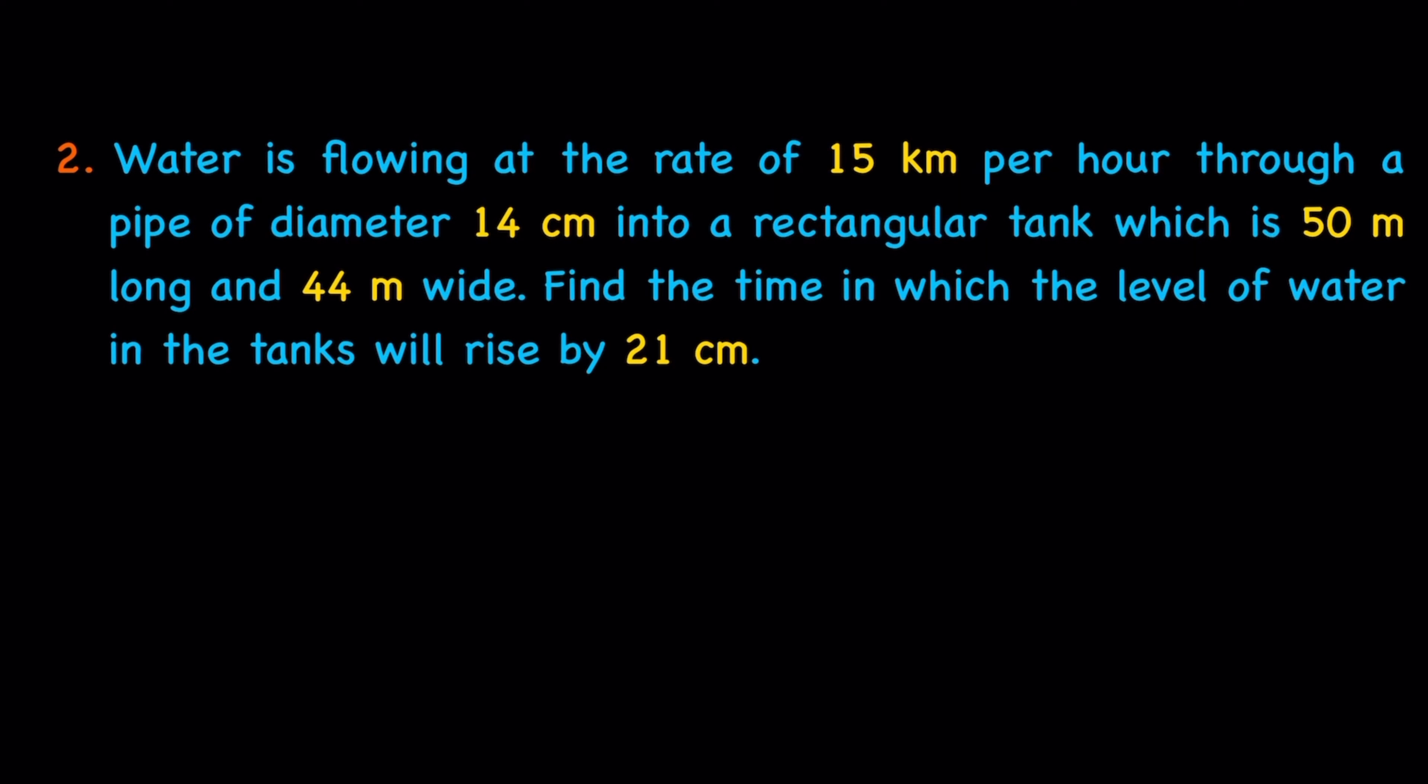Water is flowing at the rate of 15 km per hour through a pipe of diameter 14 cm into a rectangular tank which is 50 m long and 44 m wide. Find the time in which the level of water in the tank will rise by 21 cm.